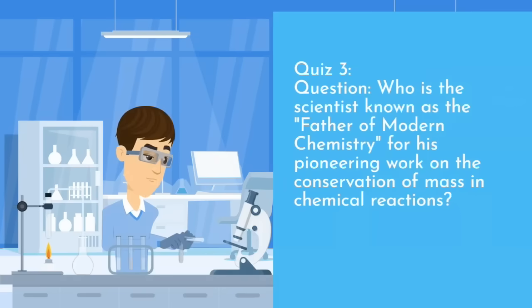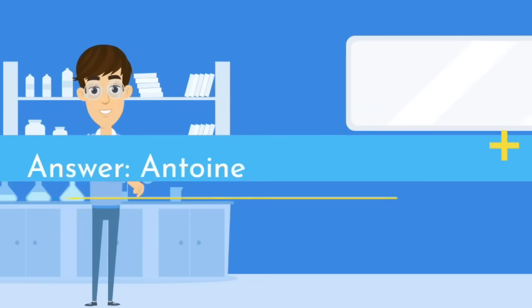Third question. Who is the scientist known as the father of modern chemistry for his pioneering work on the conservation of mass in chemical reactions? Answer: Antoine Lavoisier.